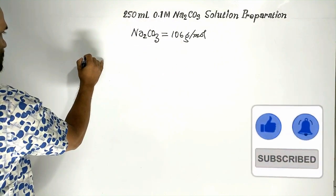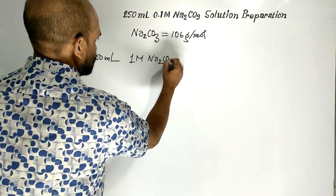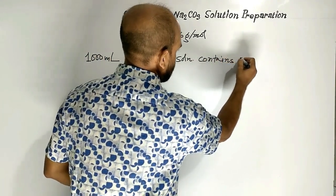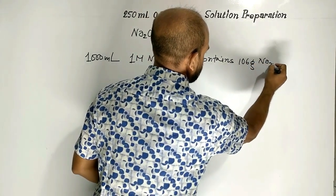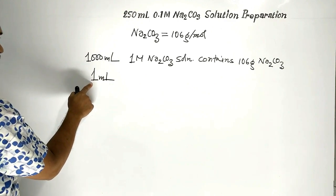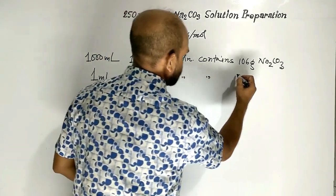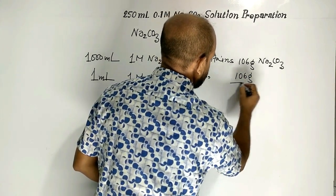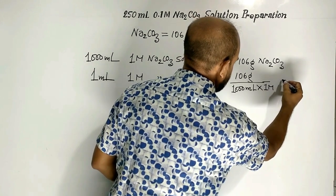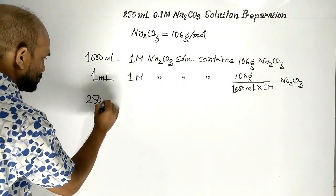1000 milliliter of 1 molar sodium carbonate solution contains 106 gram of sodium carbonate. Using the unitary method, 1 milliliter of 1 molar sodium carbonate solution contains 106 gram divided by 1000 milliliter into 1 molar.